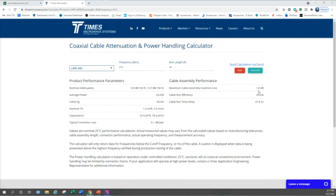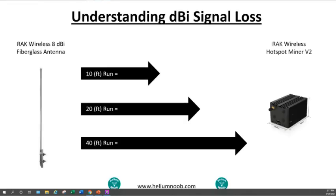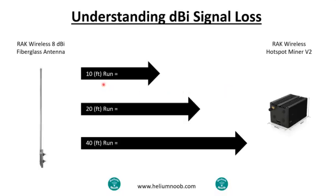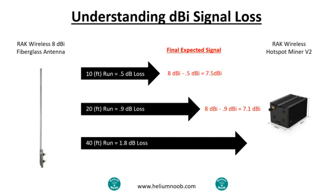Let's throw these calculations back on our PowerPoint. We've got 10-foot, 20-foot, and 40-foot runs. Remember, the 8 dBi is what you start with and you subtract the loss to get your final expected signal. On a 10-foot run you're actually running at about 7.5 dBi. On a 20-foot run you're about 7.1. And on a 40-foot run you're at 6.2.